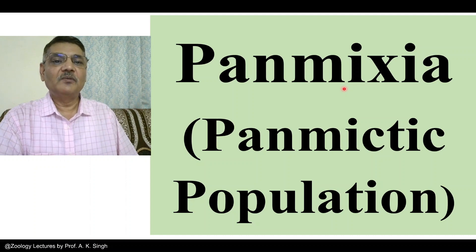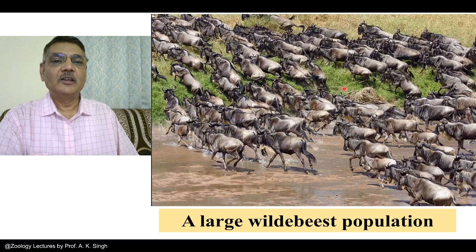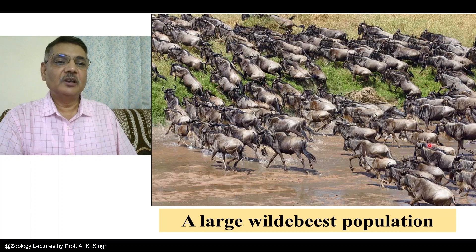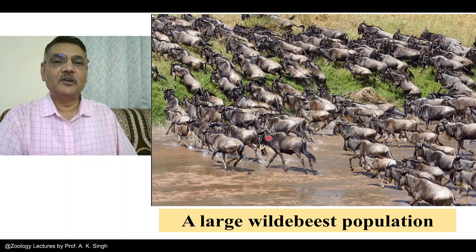Panmixia refers to random mating in the population. We can understand this by seeing this diagram. Here is a large population of wildebeest. If the individuals of this population mate randomly among themselves, then that will be a panmictic population.